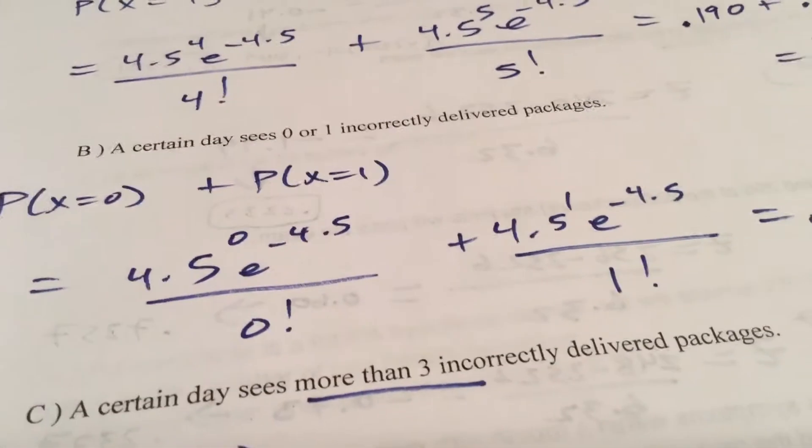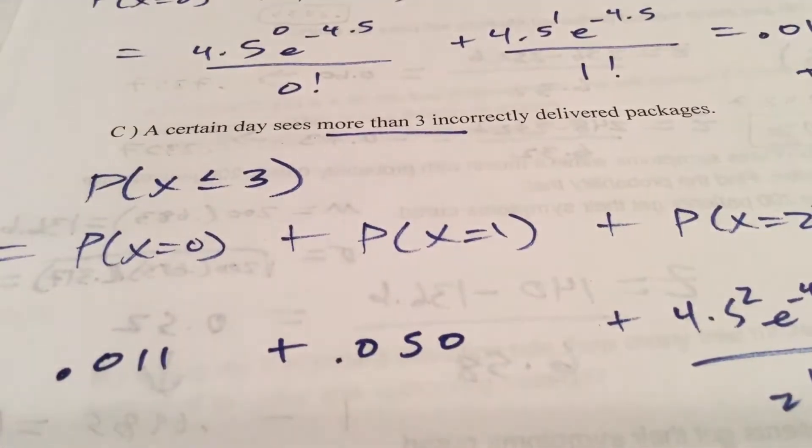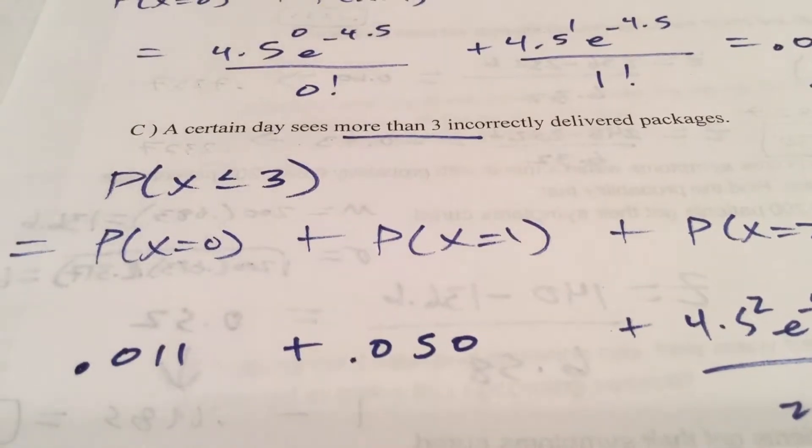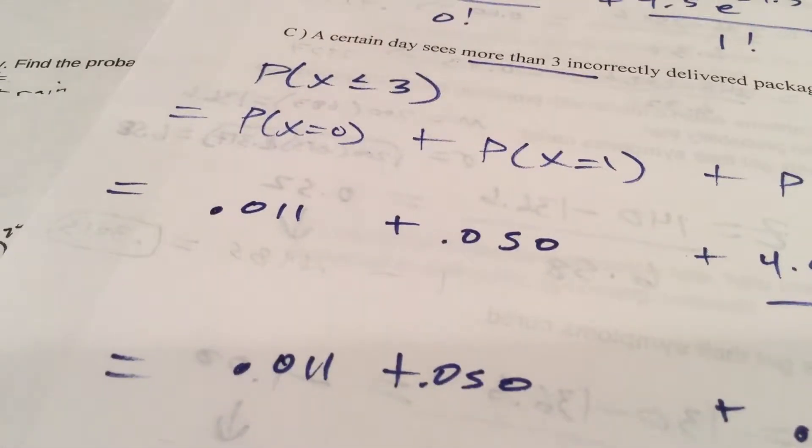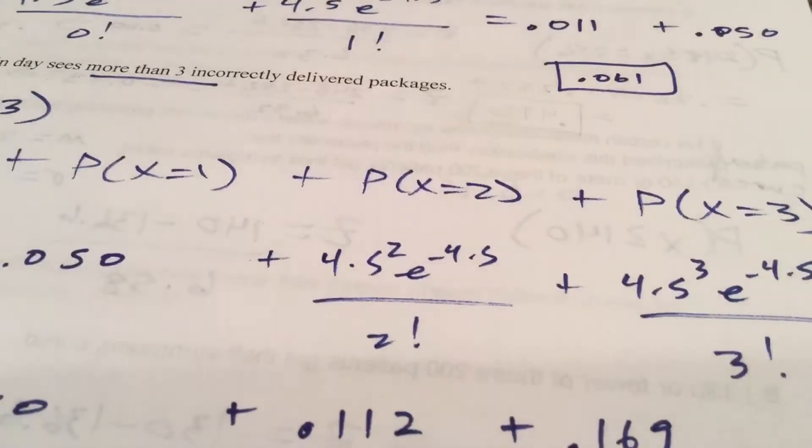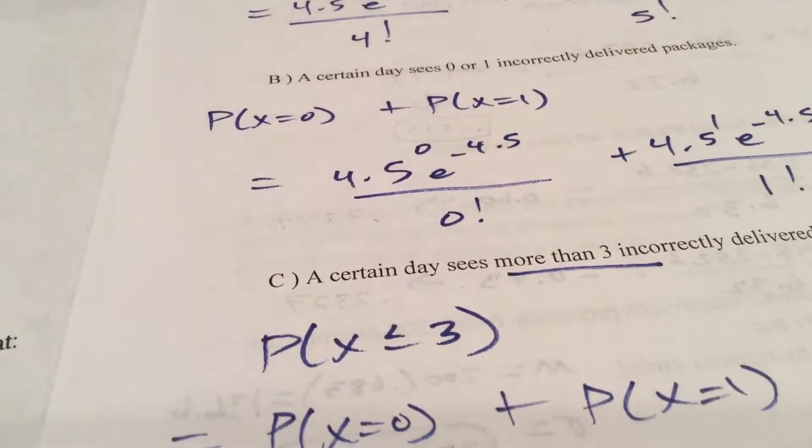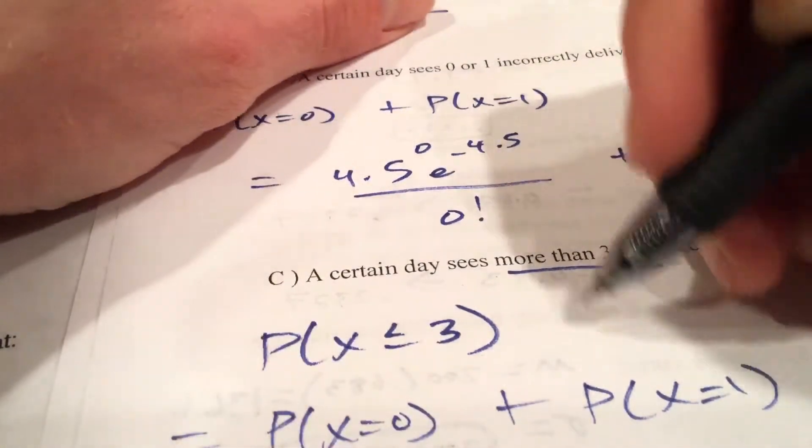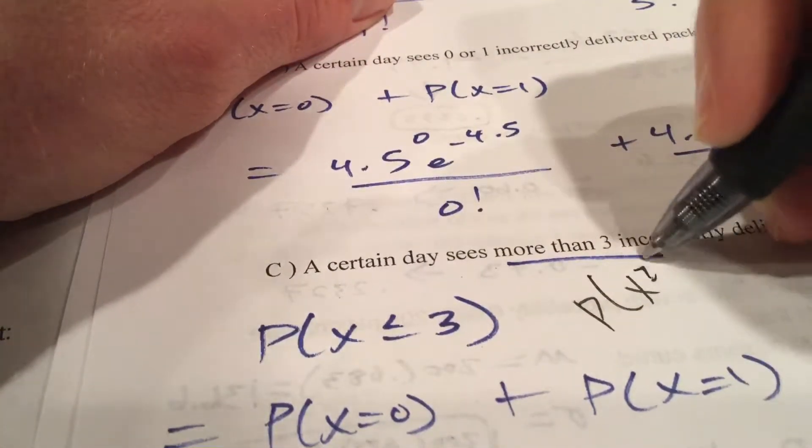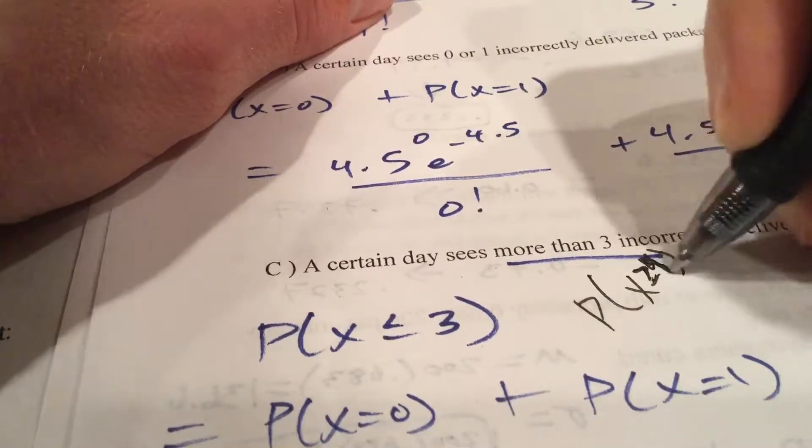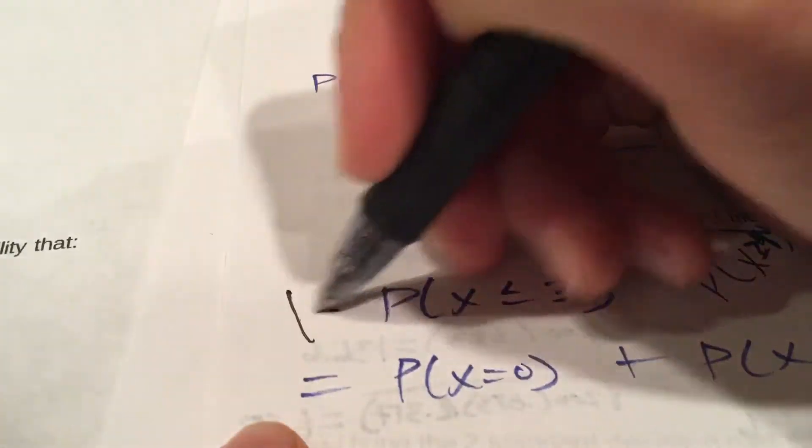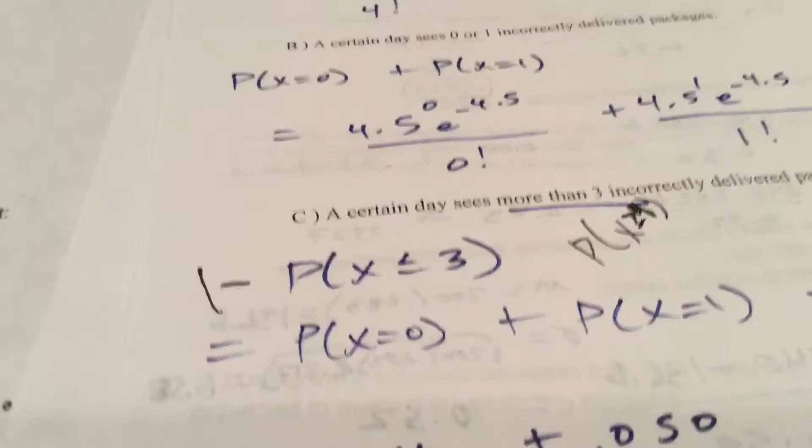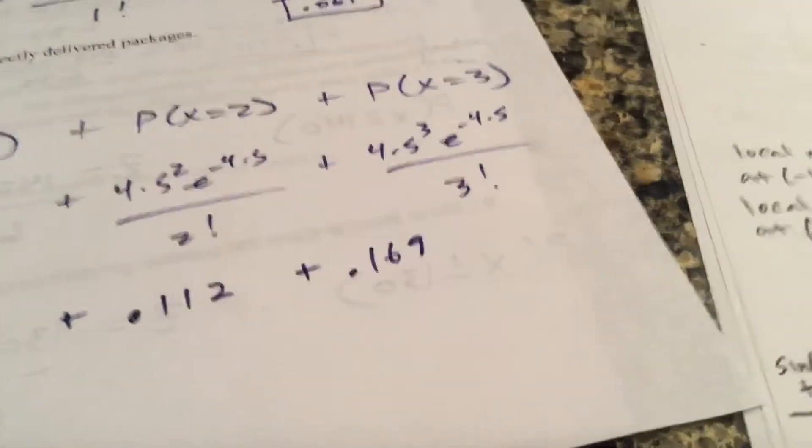Alright, and it sees more than three. Remember this is a whole number, so more than three means the probability x is greater than or equal to four. You know it's more than three, so what I had here is right, I want to use that. I just need to do one minus the probability it's less than or equal to three, which we have zero and one already, so here is two and three.